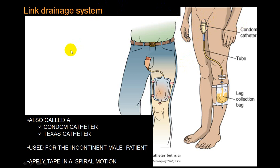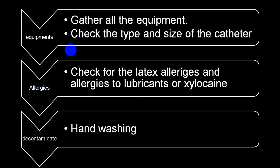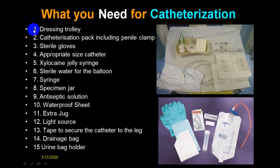Before performing the procedure, take the patient's consent, explain the entire procedure to both the patient and relatives — verbal confirmation is not enough, so check the file to confirm written consent is obtained. Explain the procedure clearly. Ensure all equipment is on the table, and check the type and size of catheter required. Ask about latex allergy and allergy to lubricants like lignocaine. Perform thorough hand washing with antiseptic precautions.